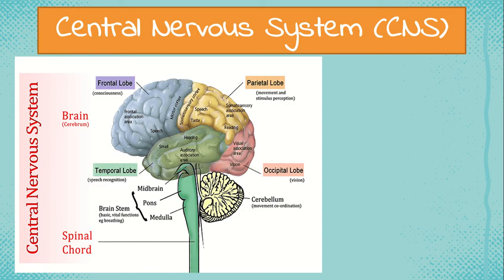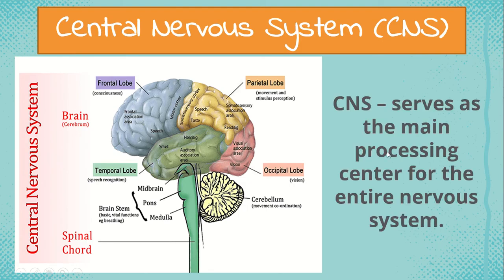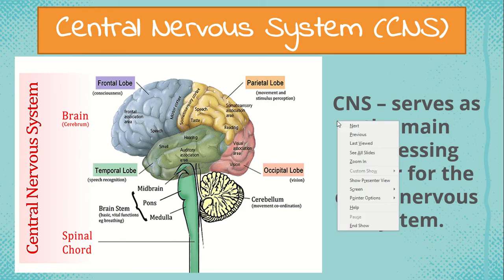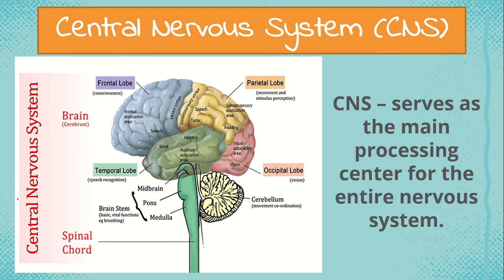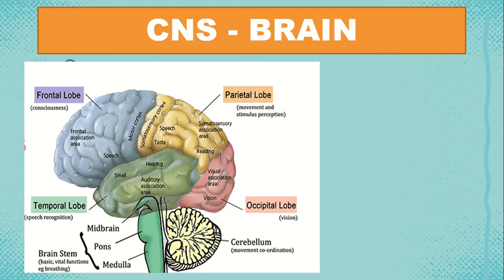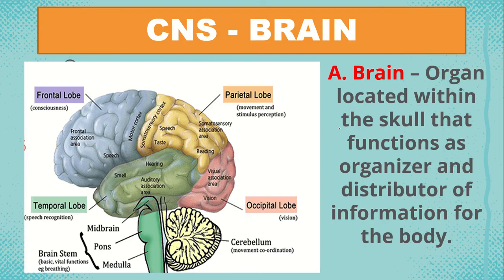Let's begin with the central nervous system. The CNS serves as the main processing center for the entire nervous system. Under the central nervous system, it is divided into two parts. We have the brain — an organ located within the skull that functions as the organizer and distributor of information for the body.